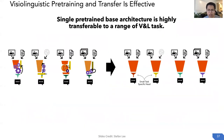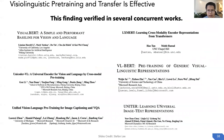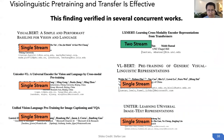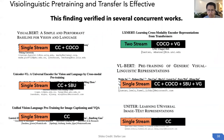To summarize the first part: a single pre-trained base architecture is highly transferable to a range of vision-language tasks. This finding is verified by several concurrent works, including single-stream models like UNITER and VisualBERT, and two-stream models such as LXMERT. These models are also pre-trained on different datasets, which can be roughly classified into in-domain datasets such as COCO and Visual Genome, and out-of-domain datasets such as Conceptual Captions and SBU.